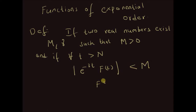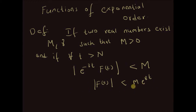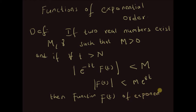which basically means that the absolute value of f of t is less than m times e to the power gamma t, since e to the power minus gamma t is always a positive value for real values of gamma and t. So this inequality holds true for positive m and a real value of gamma, then the function f of t is said to be of exponential order.